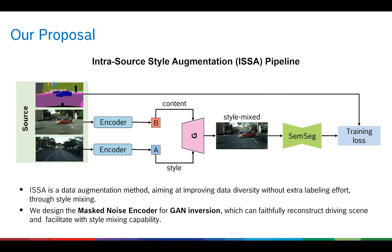In this work, we propose an Intrasource Style Augmentation strategy, in short ESA, aiming to improve the data diversity in the training set without extra labelling efforts. The core component of ESA is our mask noise encoder for GAN inversion.